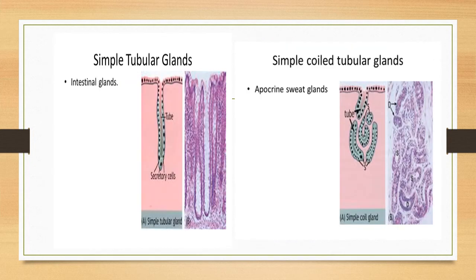Here you can see the photomicrograph of simple tubular glands with long ducts, pits, and tube-like acinar portions — these are the intestinal glands. Tubular glands can also be coiled; for example, apocrine sweat glands have a secretory unit in a tube-like fashion but coiled on itself, so they are called simple coiled tubular glands.